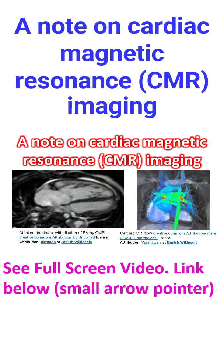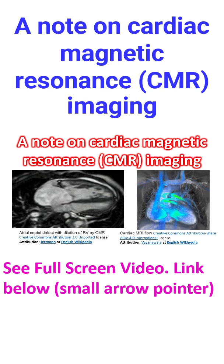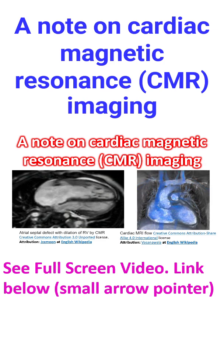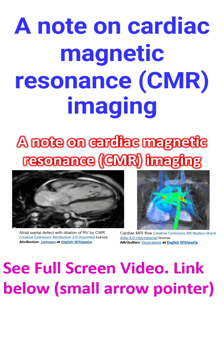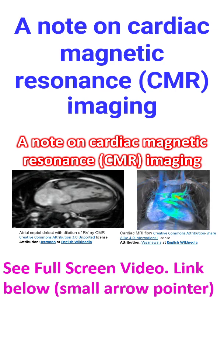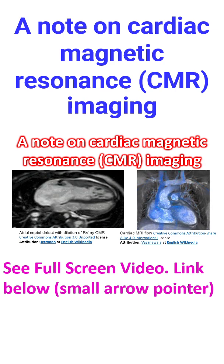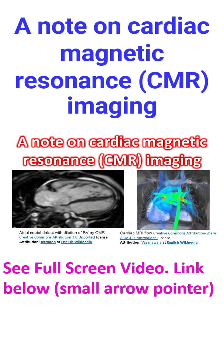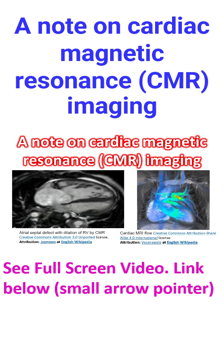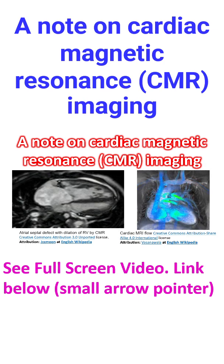I started hearing about cardiac magnetic resonance imaging when there were 1.5 tesla units around. Once I heard of a 0.5 tesla unit, though it was not being used for cardiac imaging. Later came the news of 3 tesla units. It was only today that I read of 7 tesla for CMR spectroscopy, which provides higher signal to noise ratio and more precise quantification of myocardial high energy phosphates.